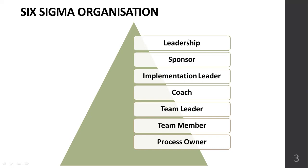There are seven specific role areas in a Six Sigma program. The first is Leadership, which could be the CEO, director, owner, or administrator of the institution or hospital where the Six Sigma project is being carried out.